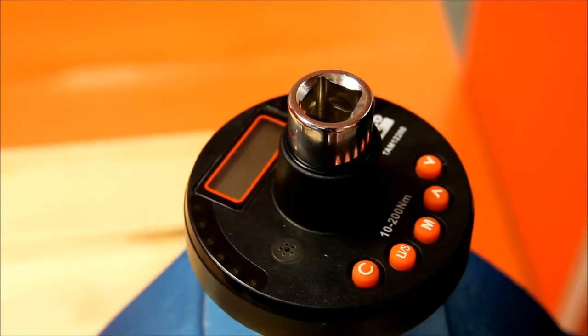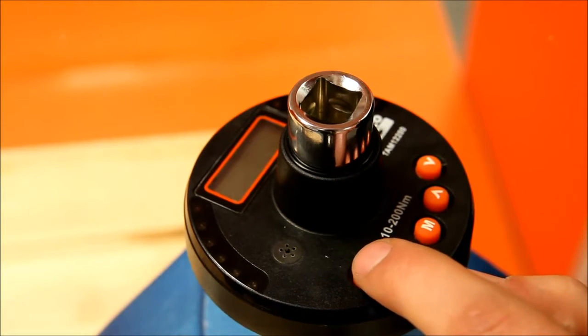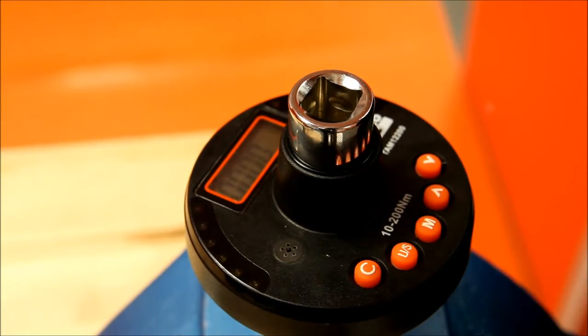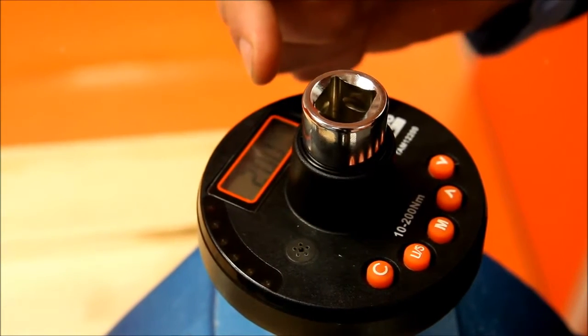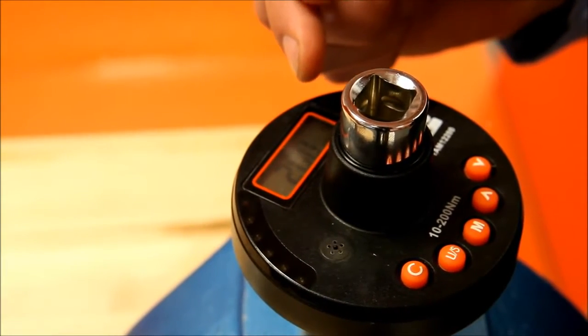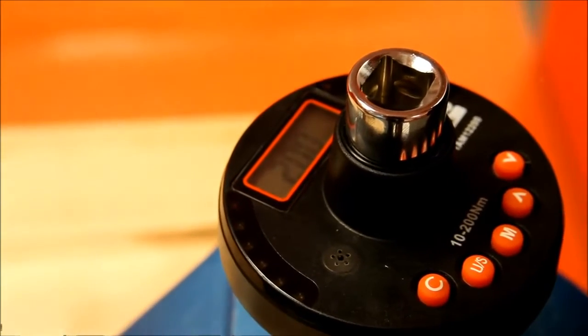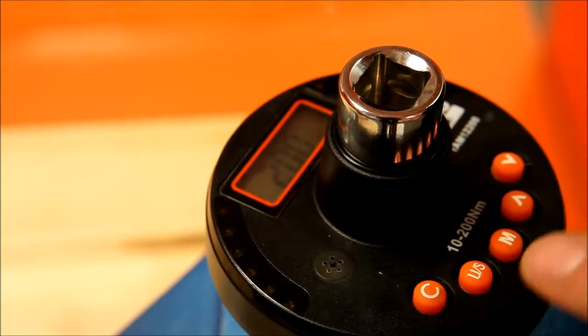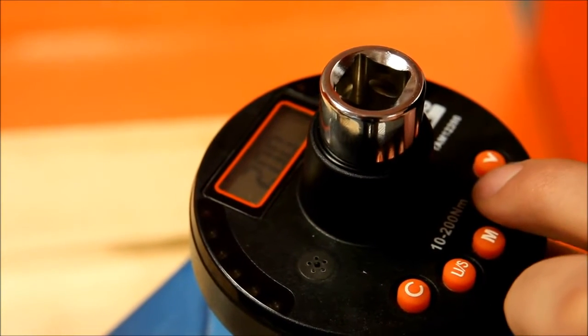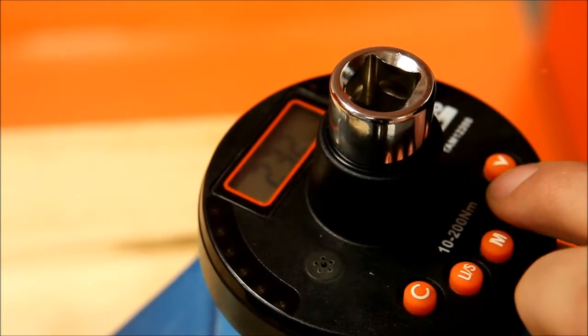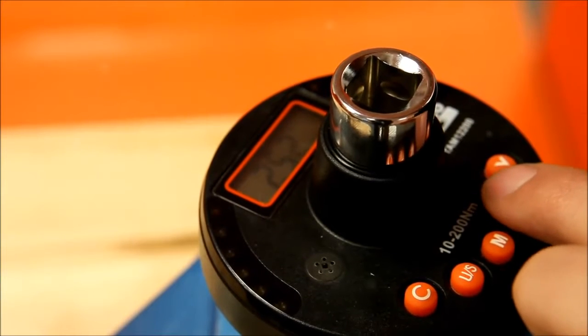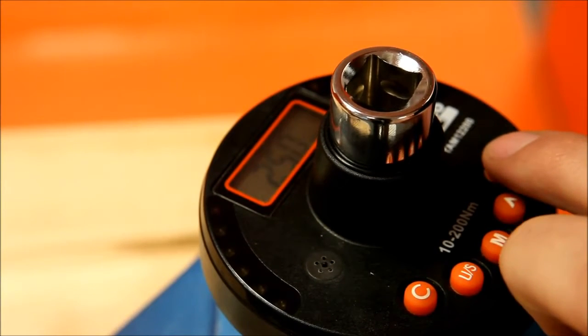To start using the device, we push the C button and it will turn itself on. In the display we will see the latest tightening we did, which in this case is 20 newton meters. We now want to do 25 newton meters, so we use the arrow button and we take it up to 25.